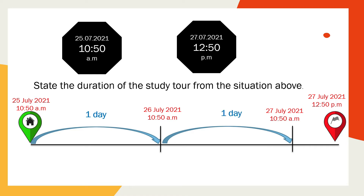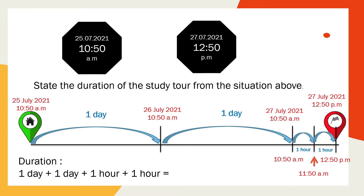Now let's check the duration from 10:50 a.m. to 12:50 p.m. It will take two hours. So the total duration will be two days and two hours.